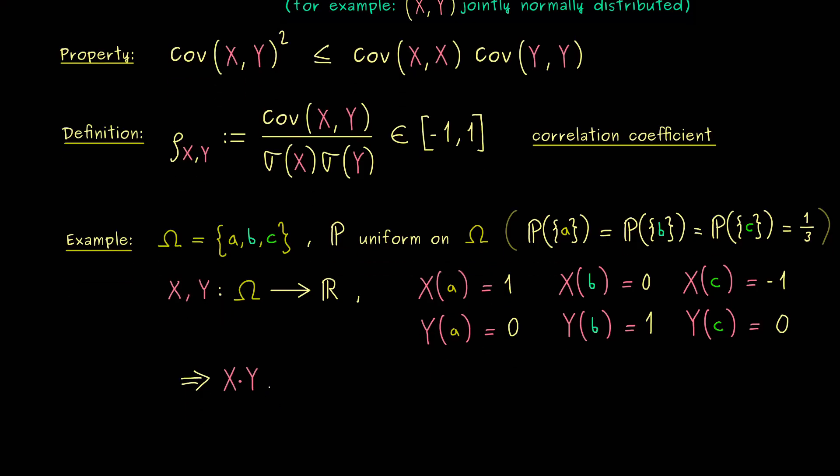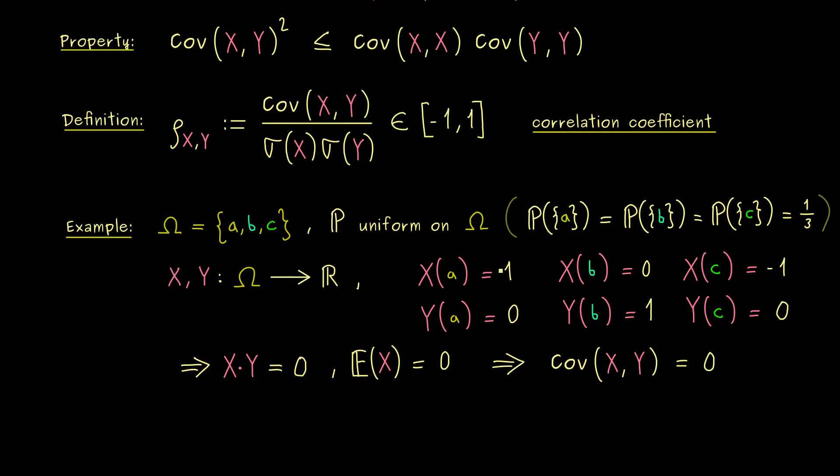Hence, this means, that the new random variable given by X times Y is simply the 0 function. Therefore, also the expectation of this random variable will be equal to 0. However, also by construction, the expectation of X is equal to 0. So by using the formula above, we conclude that the covariance between X and Y is equal to 0. So indeed, they are uncorrelated, simply because how they act on each element.